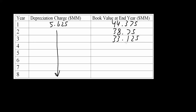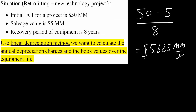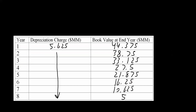If you continue this pattern, those are the answers you will get. A useful check is that the last value must equal the salvage value, which is 5 million. This makes sense because the formula uses FCI minus salvage divided by the number of years, so you end with your salvage value. If it's not 5, double-check your math. And that's all you need to do for this problem.